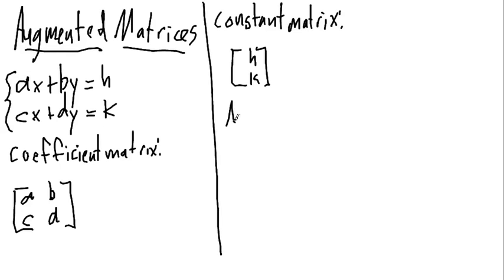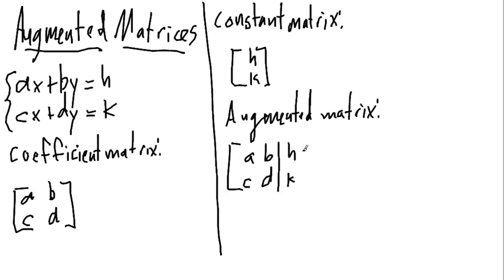And from these two, I glue them together and get the augmented matrix. The book also calls it the augmented coefficient matrix, but augmented matrix is shorter. I write A, B, C, D, and then I draw a line here and H, K.